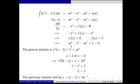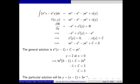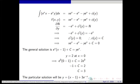Substituting c into the expression gives the general solution. We are given initial values: y equals 2 when x equals 0. Substituting x = 0 and y = 2, we get e^0 = 1, so we have minus one plus c equals two. Therefore c equals three. Substituting c back into the general solution gives us the particular solution.